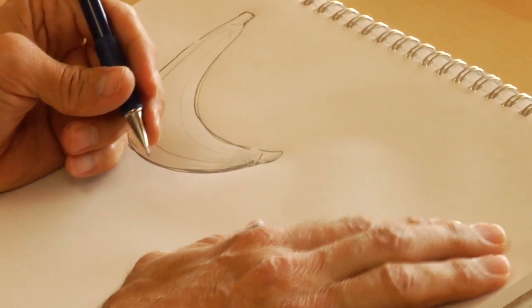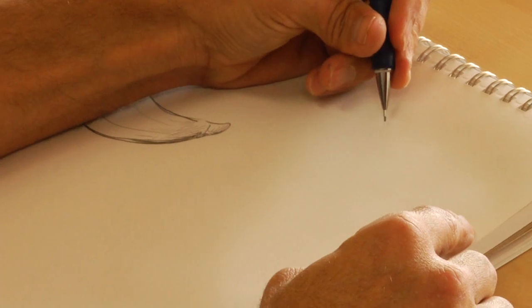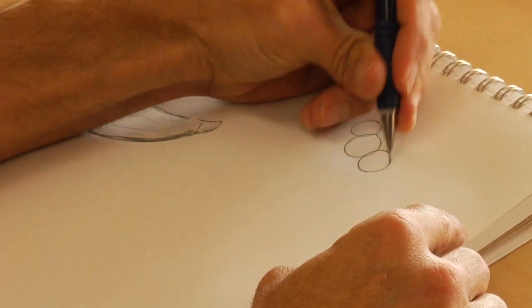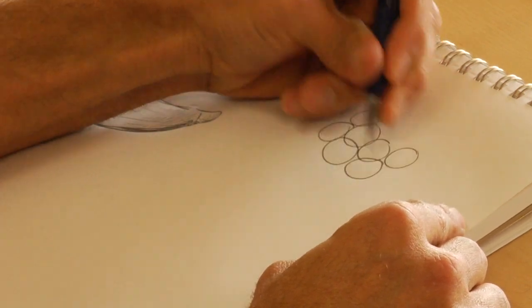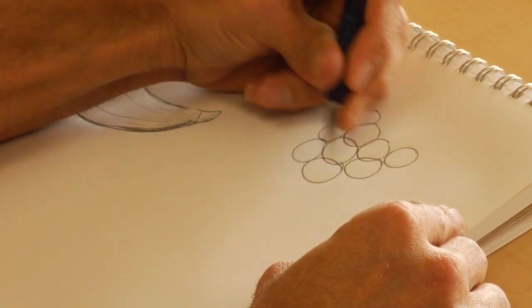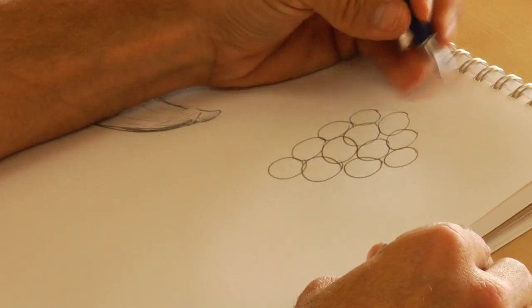And another easy one would be grapes. The grapes, I usually start with about four right next to each other, four circles, and then in between those circles I create another circles until we go down to one, and then I might add a couple on top,